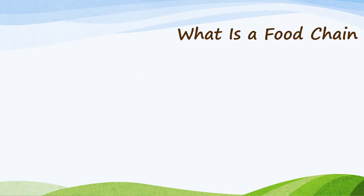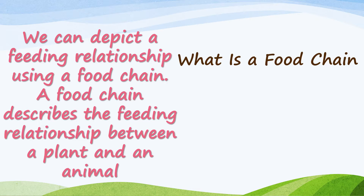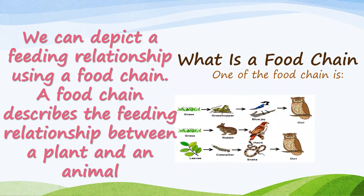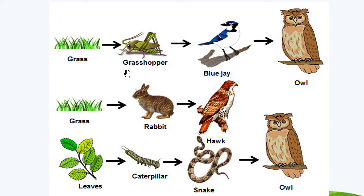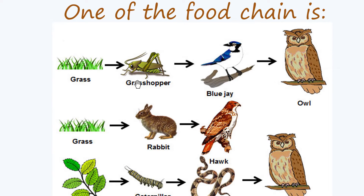Now let's learn about a food chain. We can depict a feeding relationship using a food chain. A food chain describes the feeding relationship between a plant and an animal. For example: the grass is eaten by the grasshopper, the grasshopper is eaten by the blue jay, and the blue jay is eaten by the owl. In another chain: the grass is eaten by the rabbit, and the rabbit is eaten by the hawk.